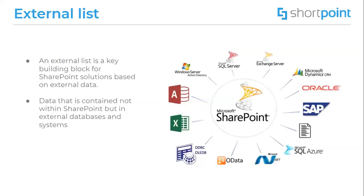One of the last list types we'll cover is the external list. An external list is a view of external data that is contained not within SharePoint, but in external databases and systems such as SAP, CAP or SQL. When you add external lists to SharePoint sites, they are displayed in an interface that looks almost exactly like a regular SharePoint list, but with data that is gathered from an external database.